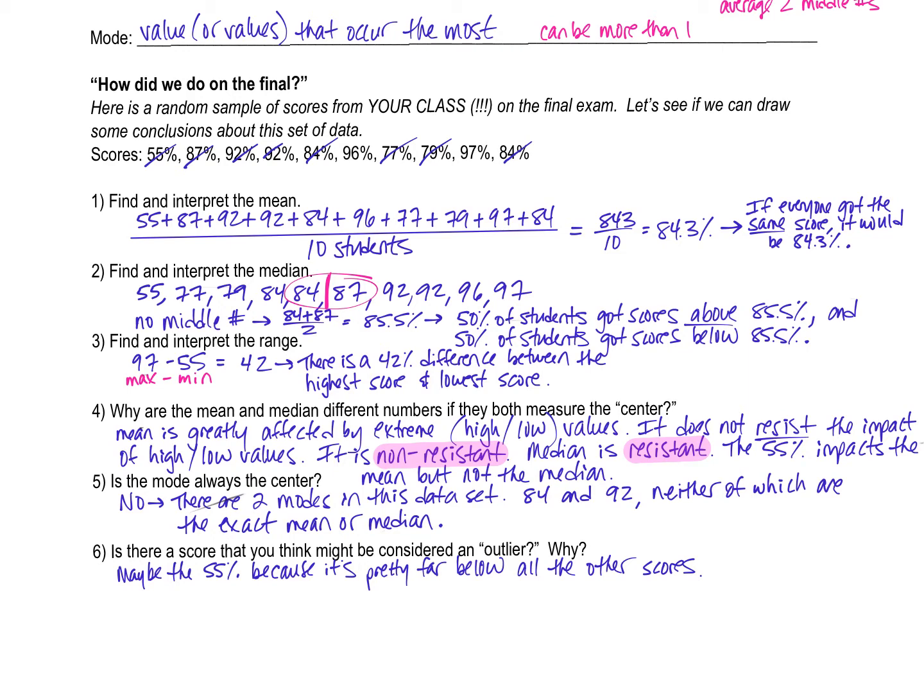The range is strictly maximum minus minimum, and that means I have a range of 42 on this final exam. Meaning of these 10 students up here, there's a 42% difference between the highest score and the lowest score.